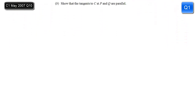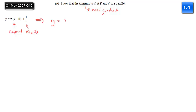Part B: show that the tangents to C at points P and Q are parallel. If we're dealing with tangents, we need to know the gradient at these points. To differentiate the equation, we have to expand the brackets and rewrite it. Expanding the brackets, we get x cubed minus 6x squared, and then 4 over x we rewrite as 4x to the minus 1, so that we can differentiate and find the gradient.